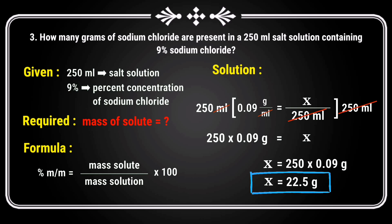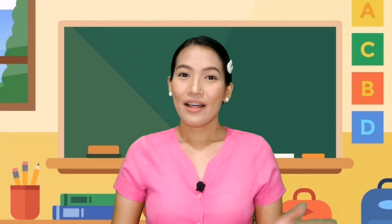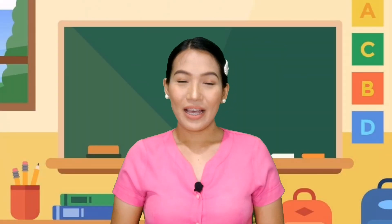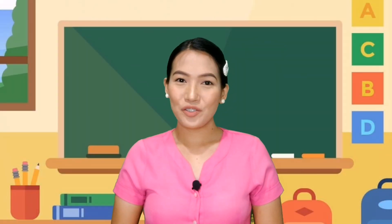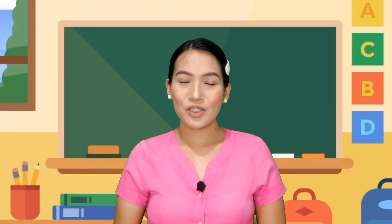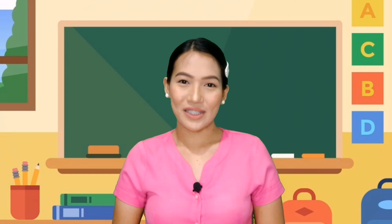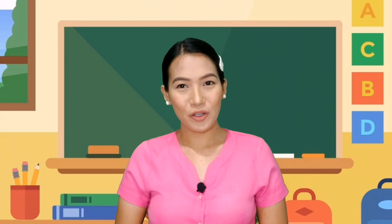And what is the concentration of the solution? Very good! 9% of sodium chloride. This time, let us try to solve problems using percent by volume.